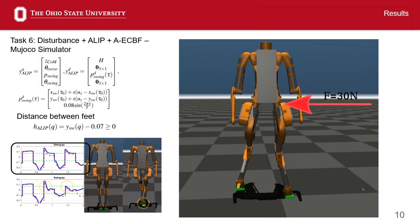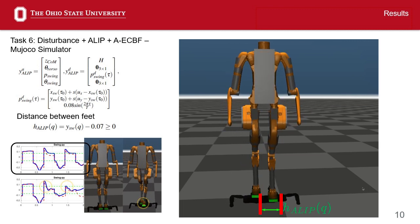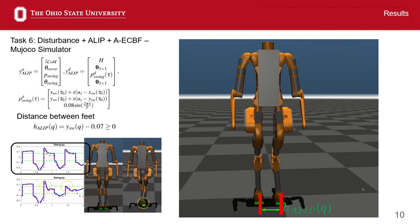Finally, in task 6, we enforce a barrier function that prevents collision between the feet and allows the robot to recover balance.